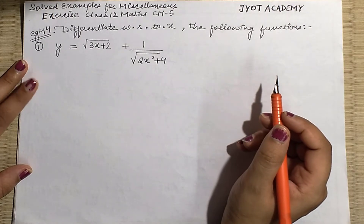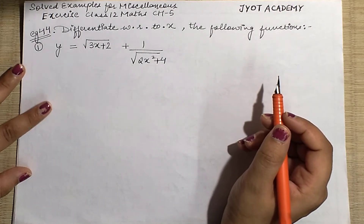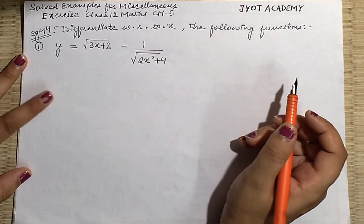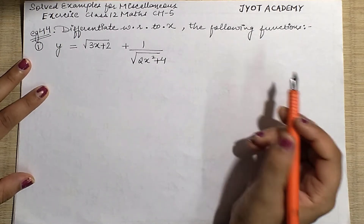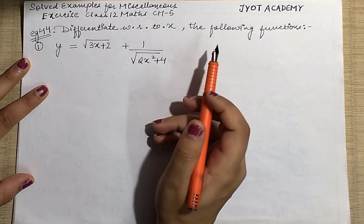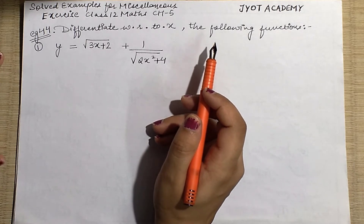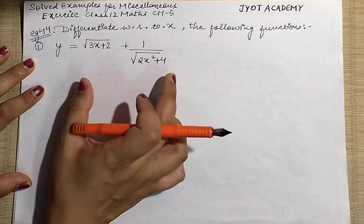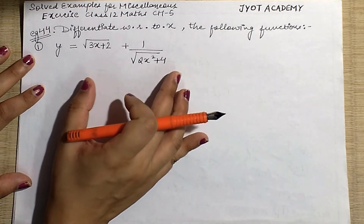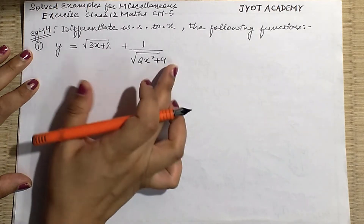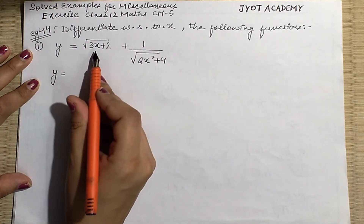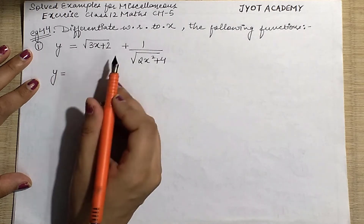Hello students, welcome back to my YouTube channel. We are continuing with solved examples for the miscellaneous exercise on Chapter 5. Let's see Example 44 — differentiate with respect to x the following functions. I have named the given function y. Now I will differentiate it with respect to x. First of all, let me write it in simplified form — if there is a root, how can I write it in power form?